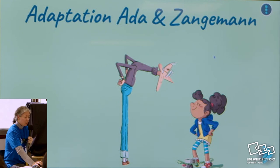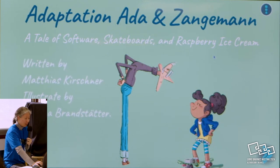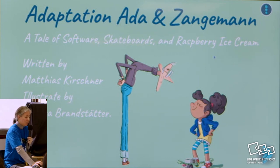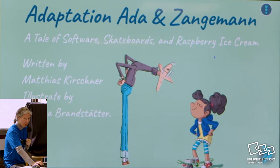The next project was an adaptation of the book 'Ada and Zangman' — maybe you know it? It's a tale of software, skateboard, and raspberry ice cream. It's written by Matthias Kirchner and illustrated by Sandra Brennstatter. They released the story with a free license — I don't remember which one, excuse me — and I contacted them and made a proposal to create an interactive story. They were super happy with this.